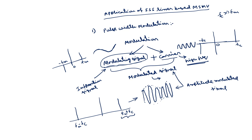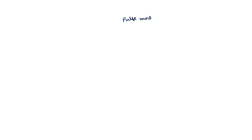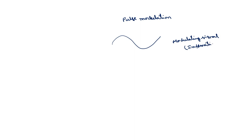That is the basic principle of modulation — this is the case of continuous wave modulation. In case of pulse modulation, the carrier is a square wave signal. The modulating signal is a continuous time signal, also called the information signal, which could be an audio or video signal. If it is an audio signal, the frequency range is 20 to 20 kilohertz.